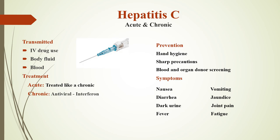Hepatitis C can be acute or chronic. It is transmitted by IV drug use, body fluid, or blood — especially if you have a blood transfusion. The treatment for acute is the same as for chronic: antiviral or interferon. The prevention for hepatitis C is hand hygiene, sharp precautions — especially for healthcare providers who work with needles — and body and organ donor screening.